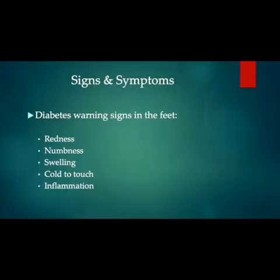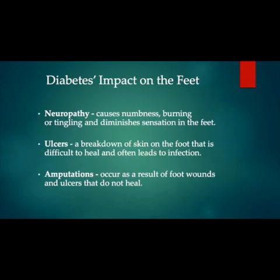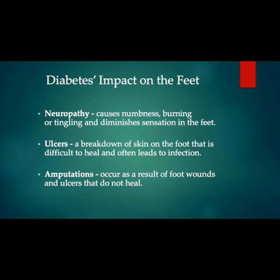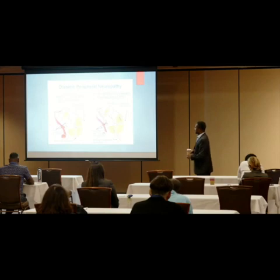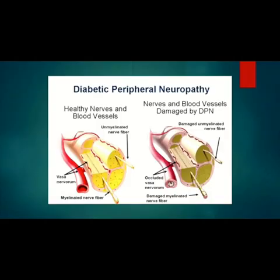Signs and symptoms a patient might report include redness, loss of sensation, swelling, coolness, or something that looks inflamed. Nerve damage in diabetics occurs because uncontrolled diabetes — whether high or low — causes damage to myelinated and unmyelinated nerve fibers. You don't get adequate stimulation from the dendrites of the nerves, leading to neuropathy. Patients describe intermittent claudication, cramping with activity.